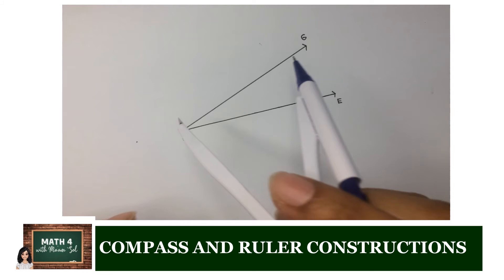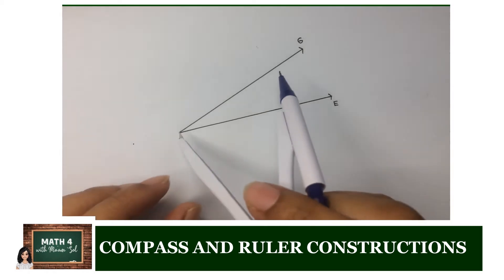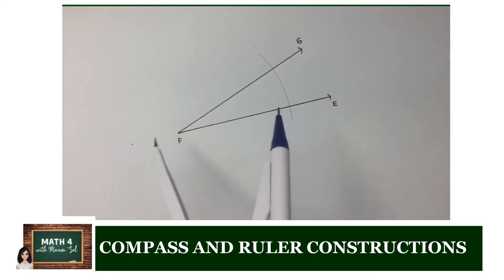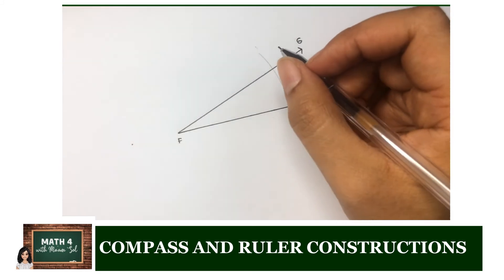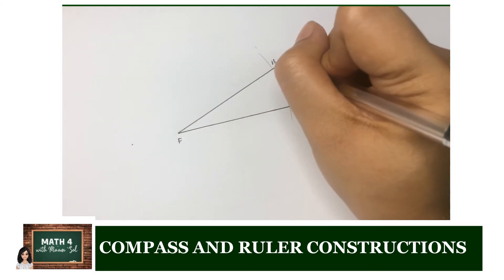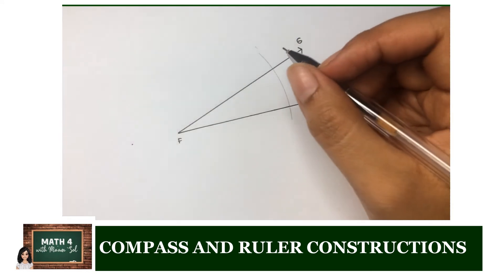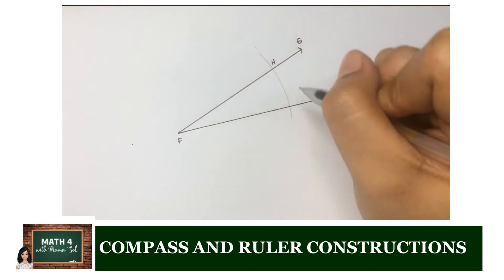Now that we are done with duplicating segments, let us also duplicate angles. We have our given angle EFG here, which we want to duplicate. In other words, we want to construct angle UNO which is congruent to angle EFG — without using a protractor, only our straight edge and compass. Let's start on our given angle EFG and construct an arc centered at F that will intersect both rays of the angle. Let us name these points H and I. Next we draw a working line W.